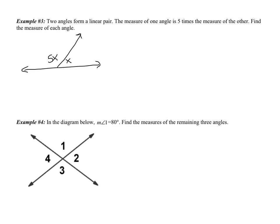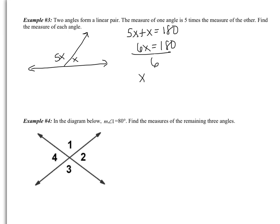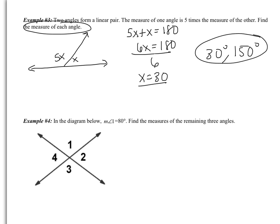Finishing example 3: two angles form a linear pair, so they add to be 180. So 5X plus X equals 180, giving 6X equals 180. Dividing by 6, X equals 30. The question asks for the measure of each angle: one angle is X, so 30 degrees; the other is 5X, so 5 times 30 equals 150 degrees. Checking: 30 plus 150 equals 180, which is correct for a linear pair.